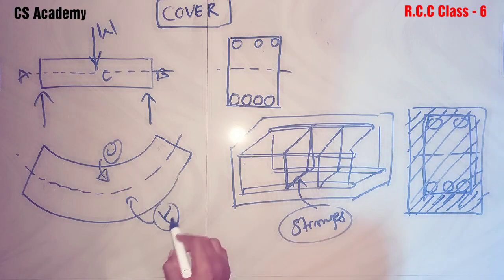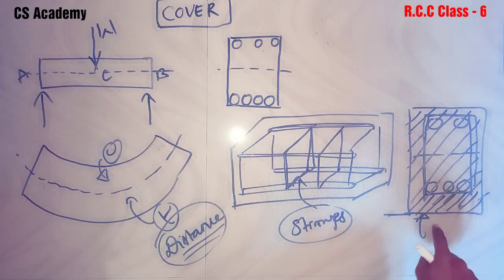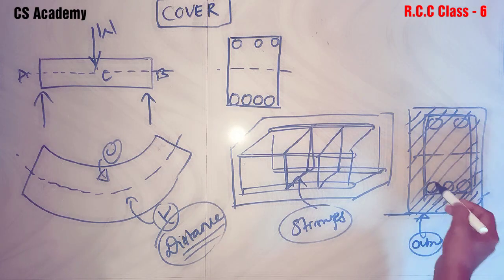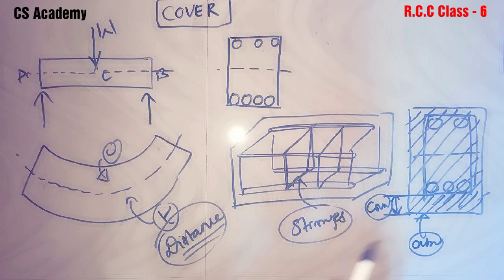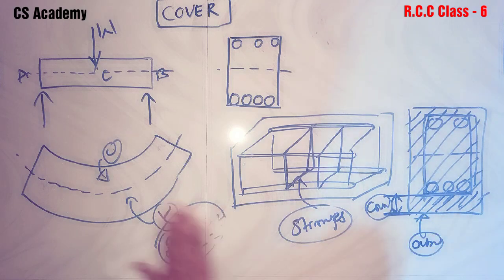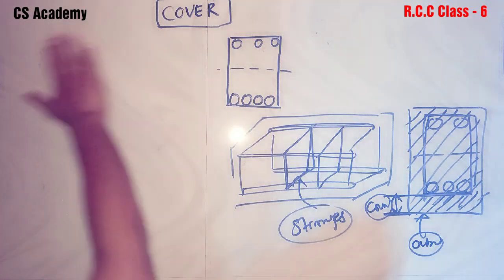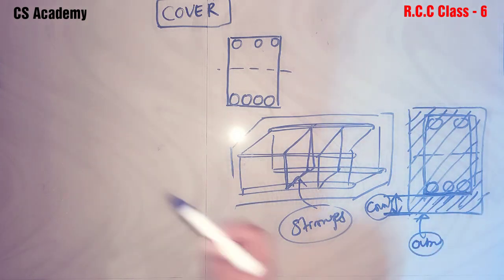Cover is nothing but a distance. It is the least distance between the outer surface of the concrete and the outer surface of the embedded reinforcement rod. So: cover = least distance between the outer surface of the concrete and the surface of the reinforcement.